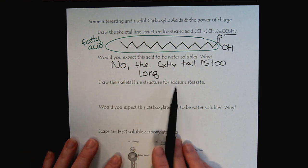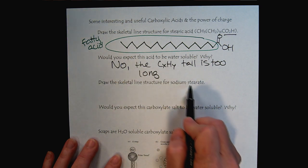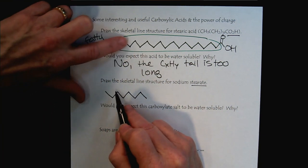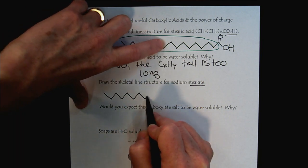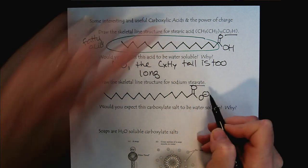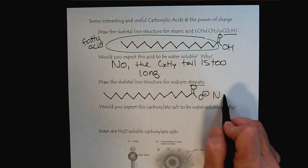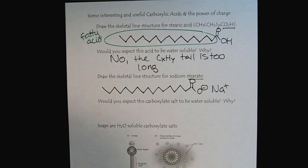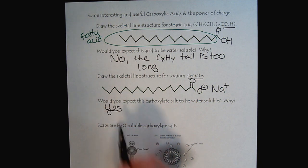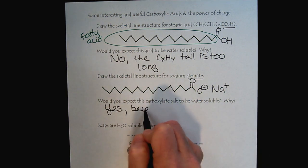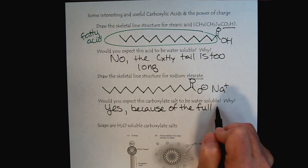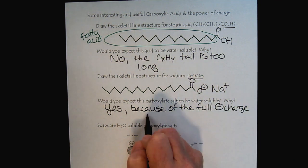But here's the interesting part. Now let's draw the skeletal line structure for sodium stearate. We recognize that as the carboxylate. So this hydrocarbon part is going to be the same. And now we'll have our carboxylate. And in this example, we have a sodium counter ion. Now, would you expect the carboxylate salt to be water soluble?